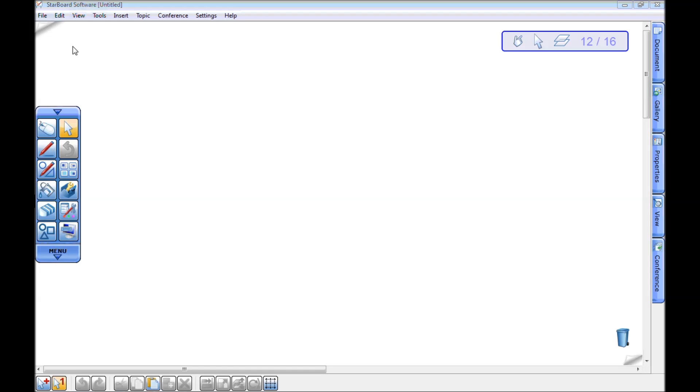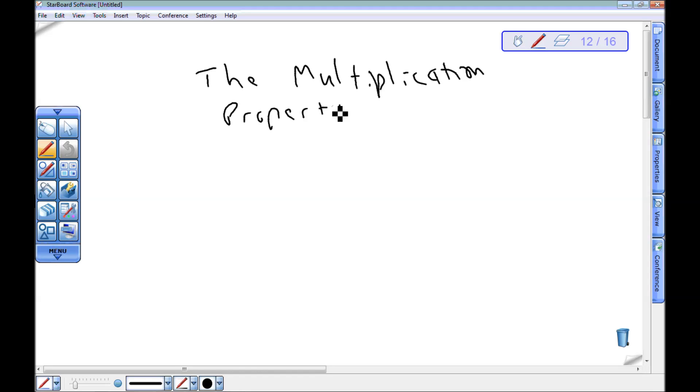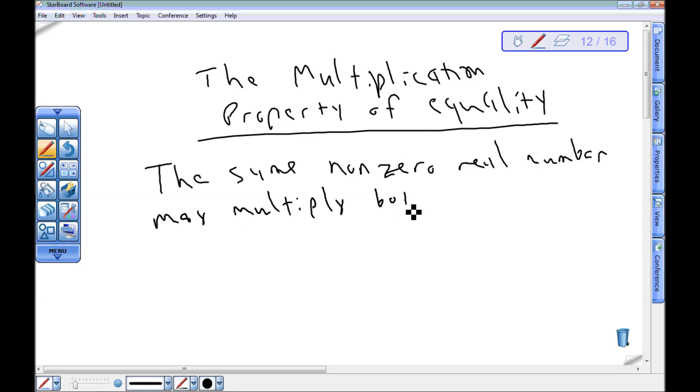Another tool we have to help us solve equations is the multiplication property of equality. This says the same non-zero real number may multiply both sides of an equation without changing the equation's solution set.